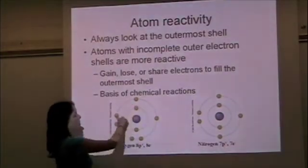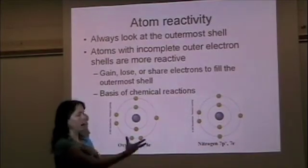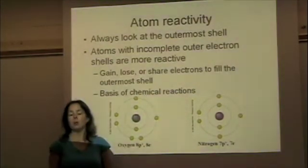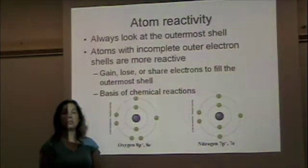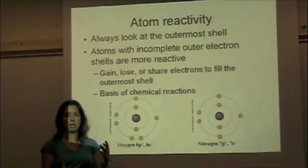Oxygen only has six in the second shell, and nitrogen only has five, so it has room for three. What these atoms want to do is they want to fill their outer shell. That's how they're going to be more stable.